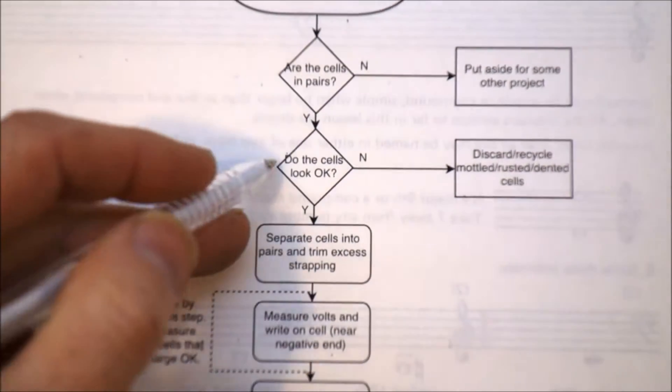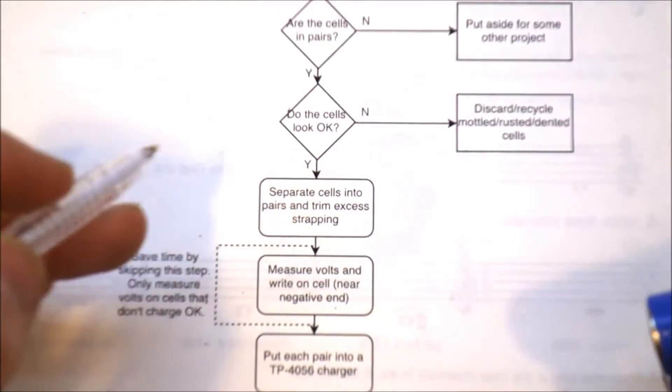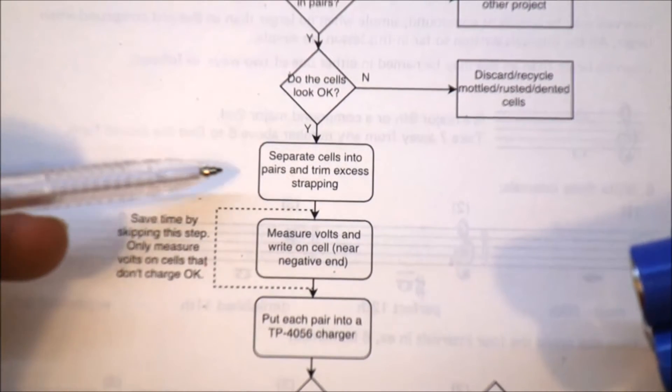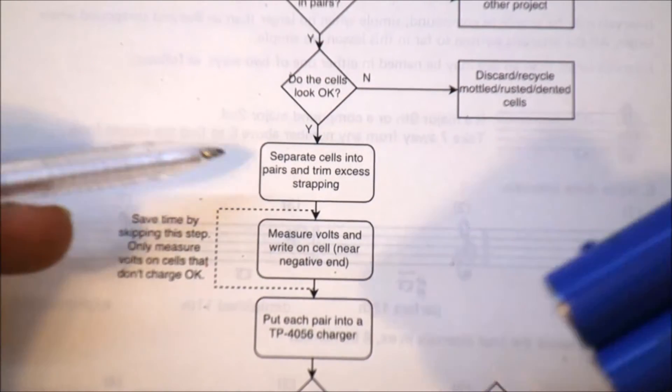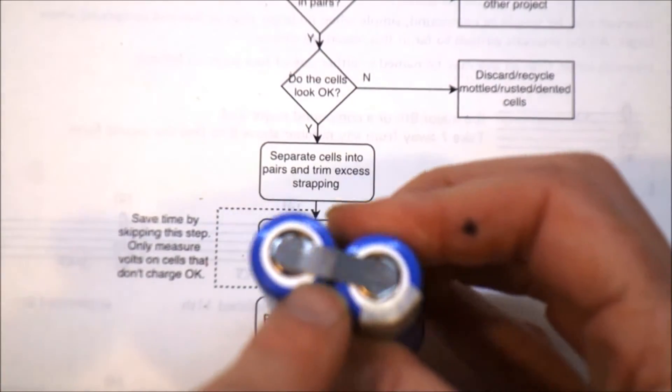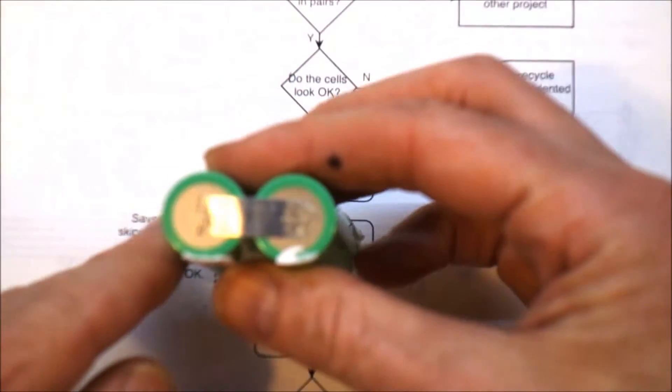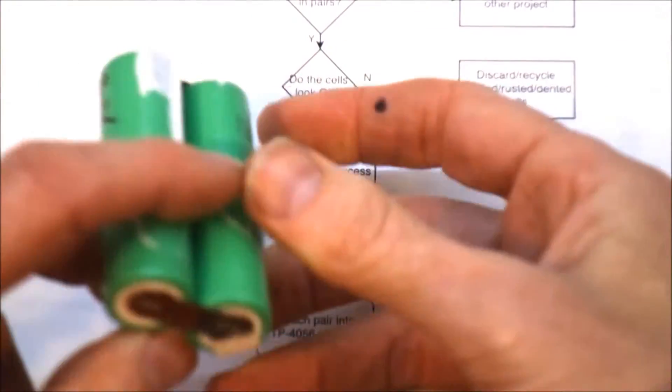Next, so assuming that they are in pairs and they look okay, I move on and separate the cells into pairs and trim the excess. So I trim them so that I've got nice clean edges on the wall, like that and that and so on.